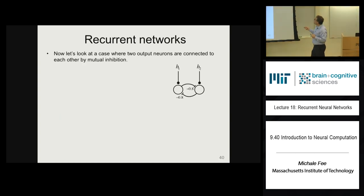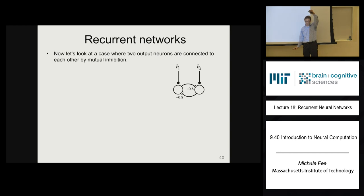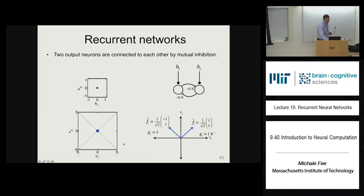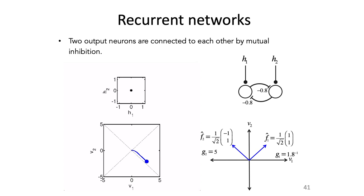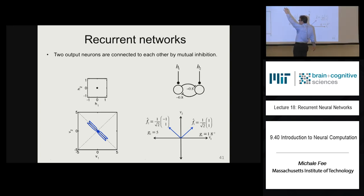Think of it this way: with mutual inhibition, when this neuron is active, it tries to suppress that neuron. When that neuron has a positive firing rate, it tries to make the other neuron have a negative firing rate. The network likes to have one neuron firing positive and the other going negative. So if you put an input into the first neuron, it tends to suppress activity in the second neuron V2; if you put input into neuron 2, it tends to make V1 go negative. It's the autapse network, but rotated to minus 45 degrees.